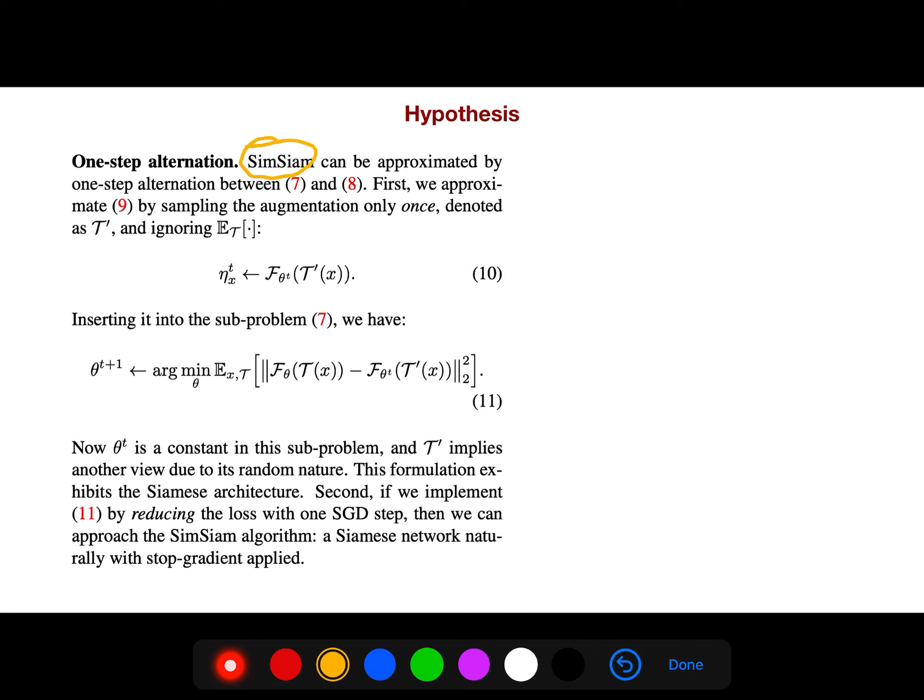This SimSiam algorithm can be approximated by one-step alternation between both. First we approximate it by sampling the augmentation only once, and then inserting it into sub-problem 7. Now θ is a constant in this sub-problem. τ implies another view due to random nature. This formulation exhibits the Siamese architecture. If we implement this by reducing the loss with one SGD step, then we approach the SimSiam algorithm, a Siamese network naturally with stop-gradient applied.